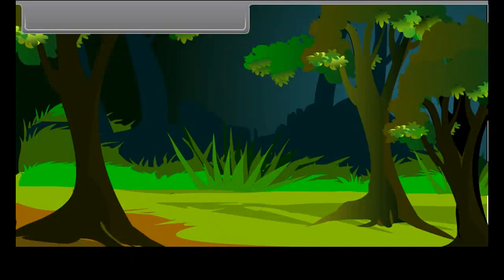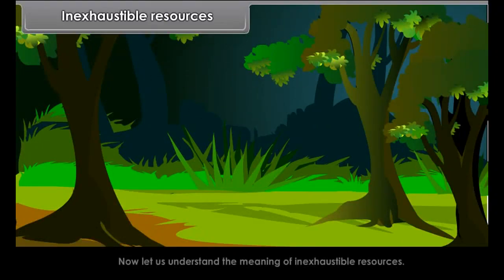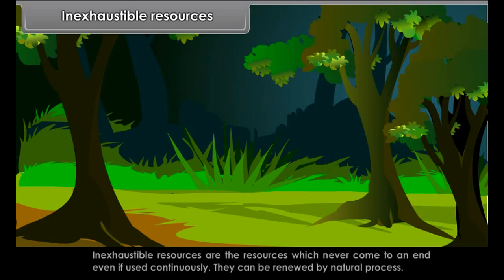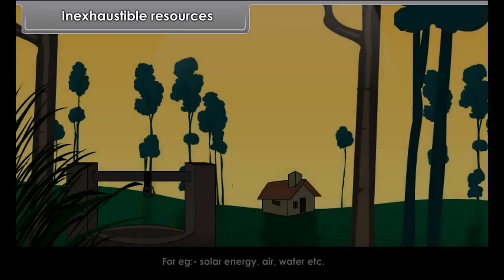Exhaustible resources are the resources which we obtain from the earth's crust and which come to an end once they are used. They cannot be replaced. For example, coal, petroleum, and natural gas.